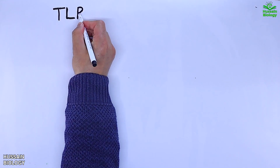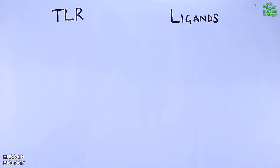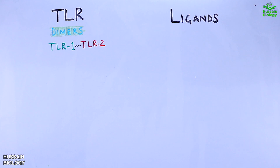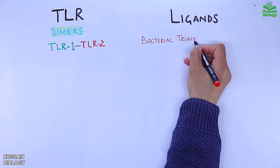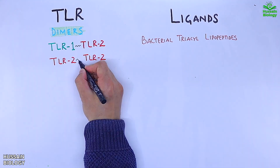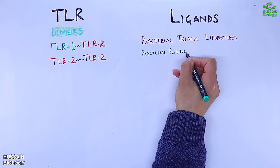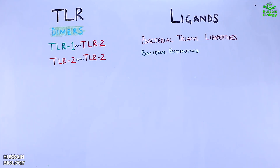On the left side we have TLR dimers; on the right we have their corresponding ligands from pathogens. First, the TLR1/TLR2 heterodimer binds ligands in the form of bacterial triacyl lipopeptides. Second, the TLR2/TLR2 homodimer binds ligands in the form of bacterial peptidoglycans and fungal phospholipomannan.